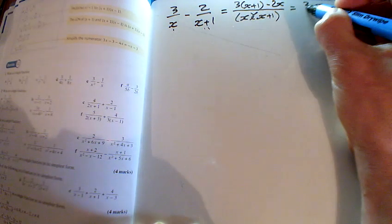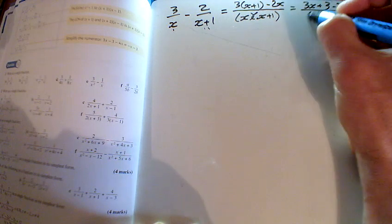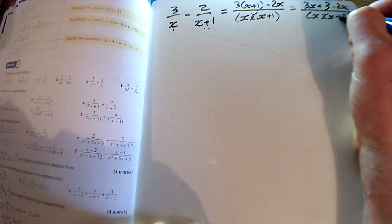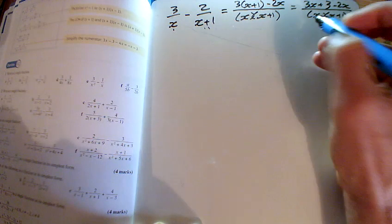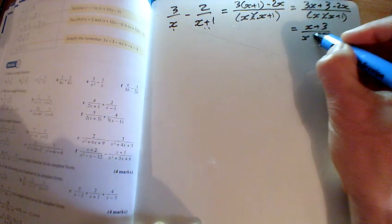And we can actually tidy up the top here, so multiplying out the bracket, and I can then see that I can do 3x take away 2x, leaving us just x plus 3 on the top.